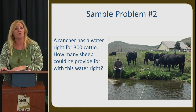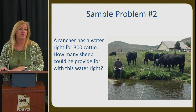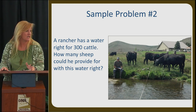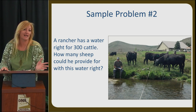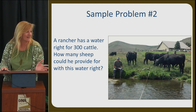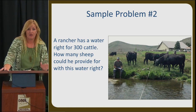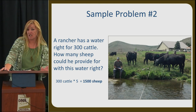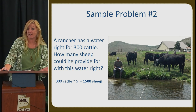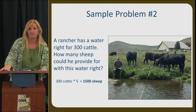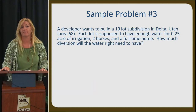Sample problem two: a rancher has a water right for 300 cattle. How many sheep can he water with this water right? Five sheep equals one cow, so 300 times five equals 1,500 sheep.